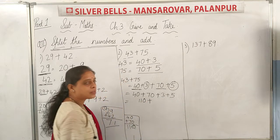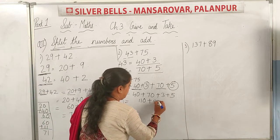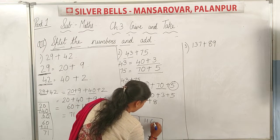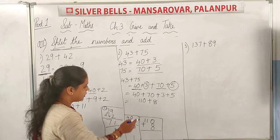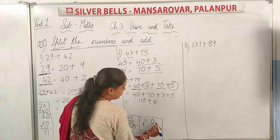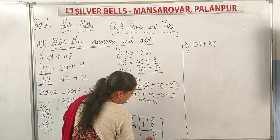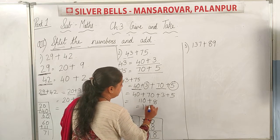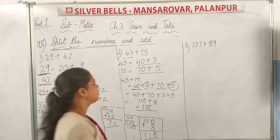Now the addition: 40 plus 70 — 0 plus 0 is 0, and 4 plus 7, count on with 7 fingers after 4: 5, 6, 7, 8, 9, 10, 11 — so 40 plus 70 is 110. And 3 plus 5 is 8. Now we do 110 plus 8: 0 plus 8 is 8, and 1 stays. So the answer is 118.